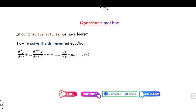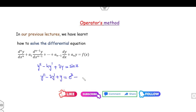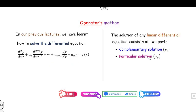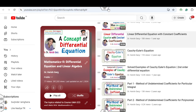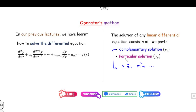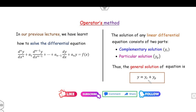In our previous lecture we have seen how you can solve any differential equation, whether it is a second order such as y double dash minus 4y dash plus 3y equals sin x, or it can be like minus 3y dash plus y equals e raised to power x minus x plus 1. We decompose into two solutions: one is the complementary part and the second is the particular solution. For the complementary solution we write the auxiliary equation — for example, m squared plus m and so on. Once you find the value of yc and yp, the general solution is yc plus yp.